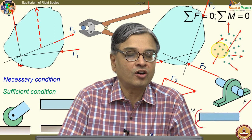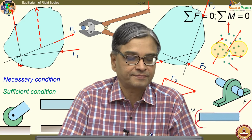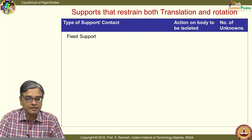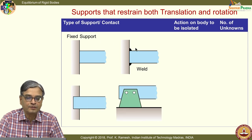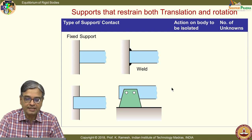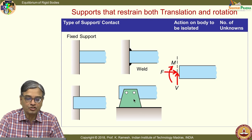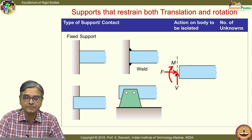Let us continue our discussion on equilibrium of rigid bodies. In the last class, we had looked at supports that restrained both translation and rotation. We saw the fixed support in various forms — you could weld it or put it inside the wall. In the simplest case, you can even put two pins to make it a fixed joint. When I isolate the body, I would in general have a force whose direction is not known. Hence, I have put a horizontal component and also a vertical component.